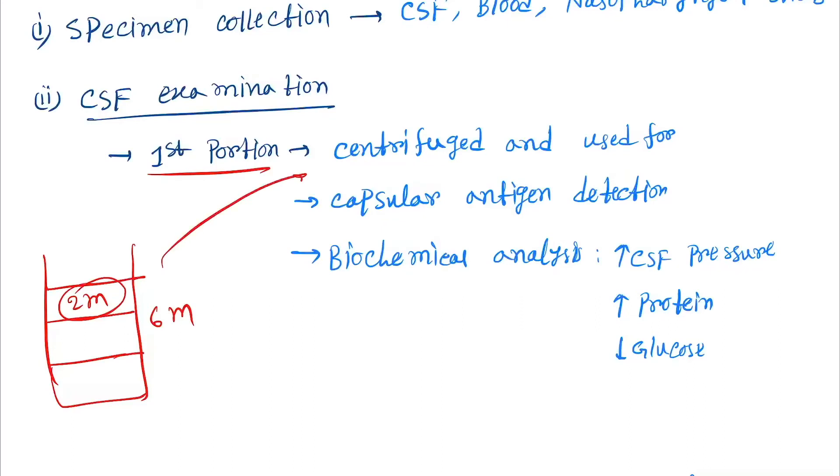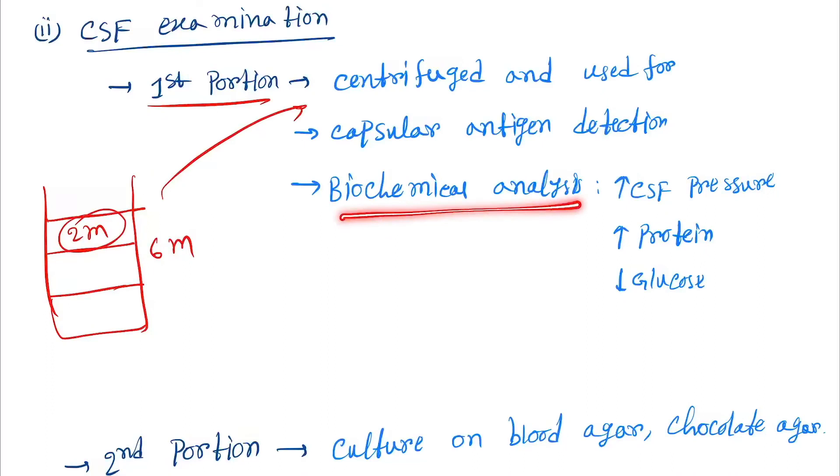2 ml we will take for centrifuge and use for capsular antigen detection and biochemical analysis: increase in CSF pressure, increased protein, decreased glucose in the CSF.